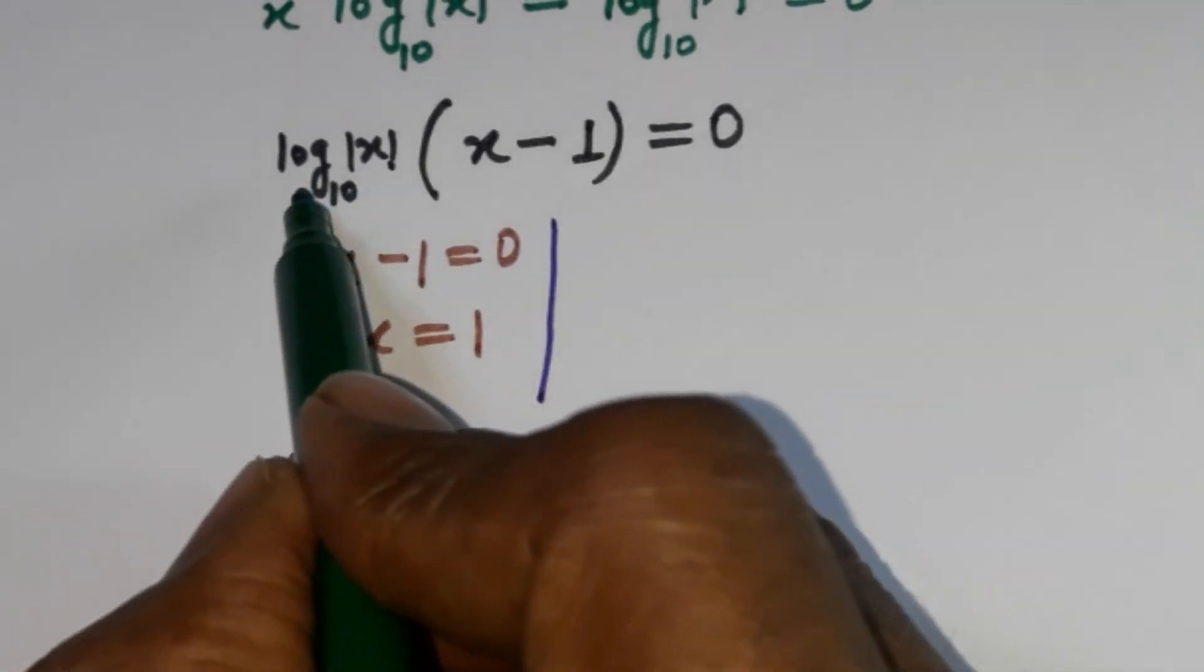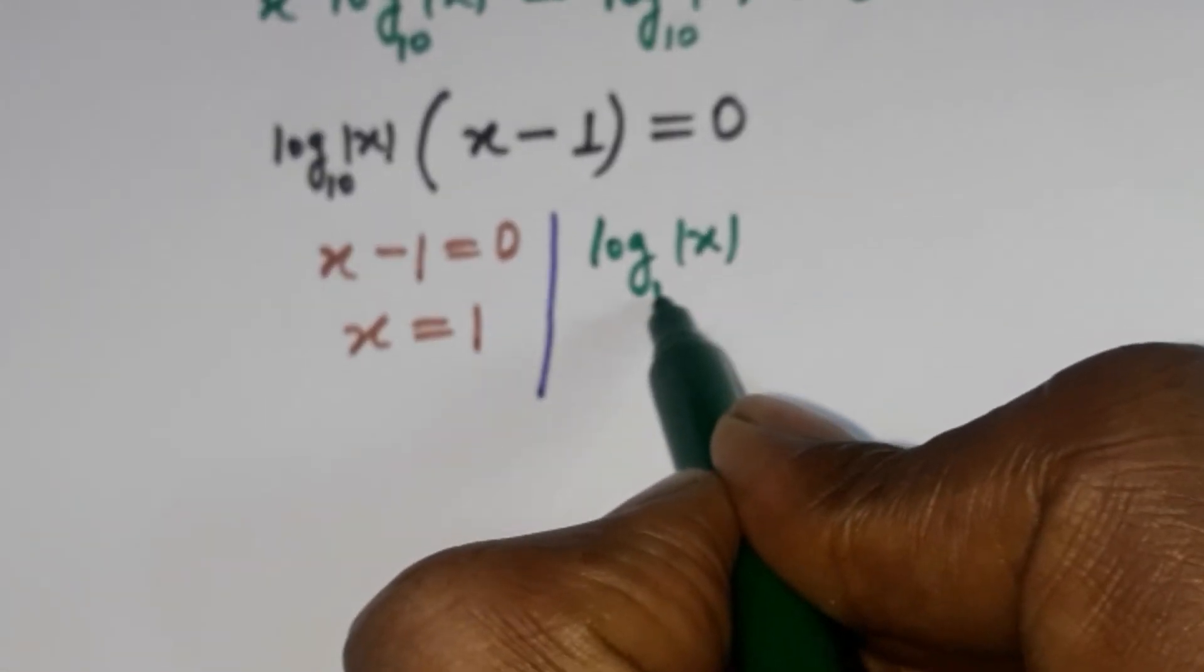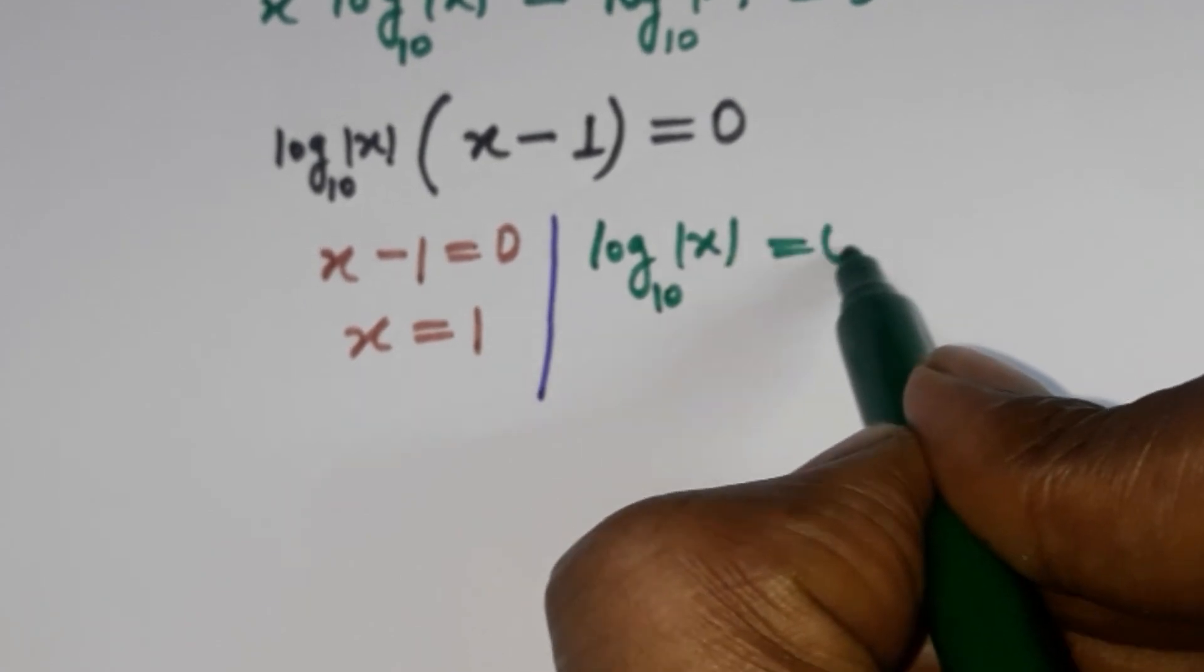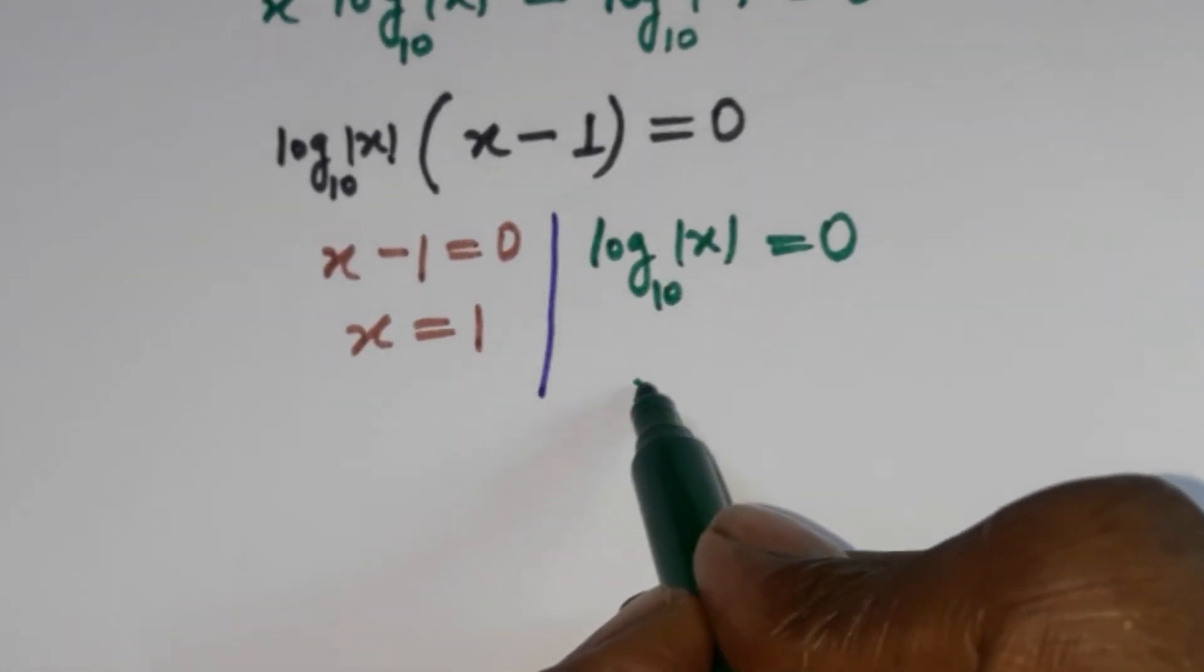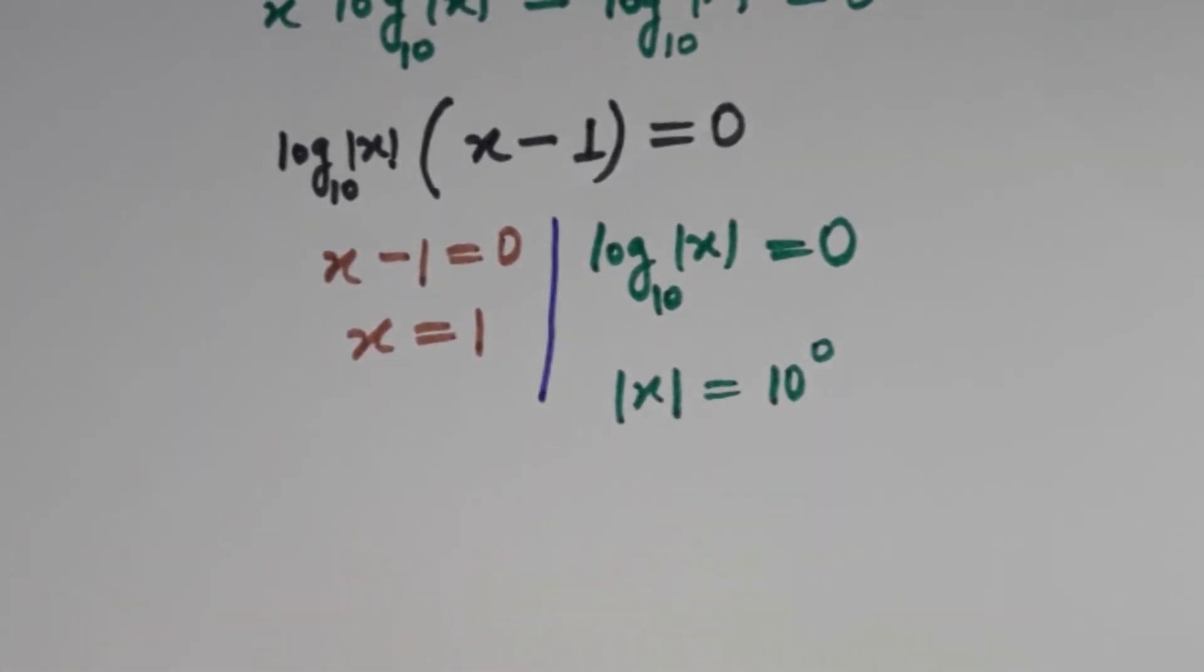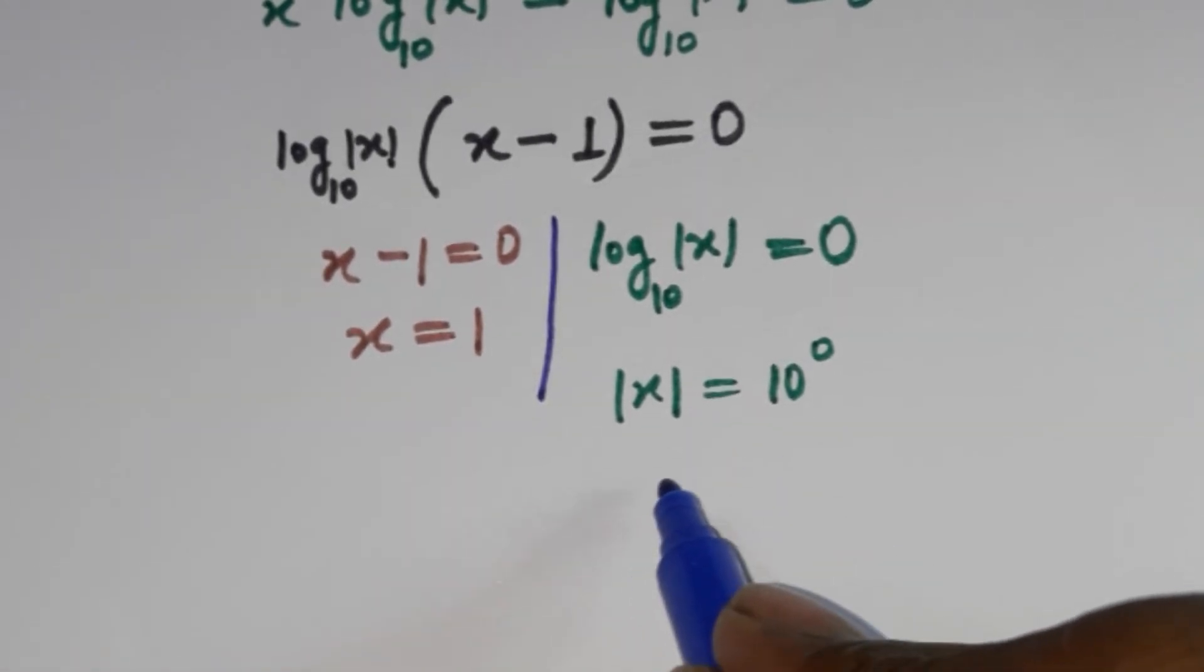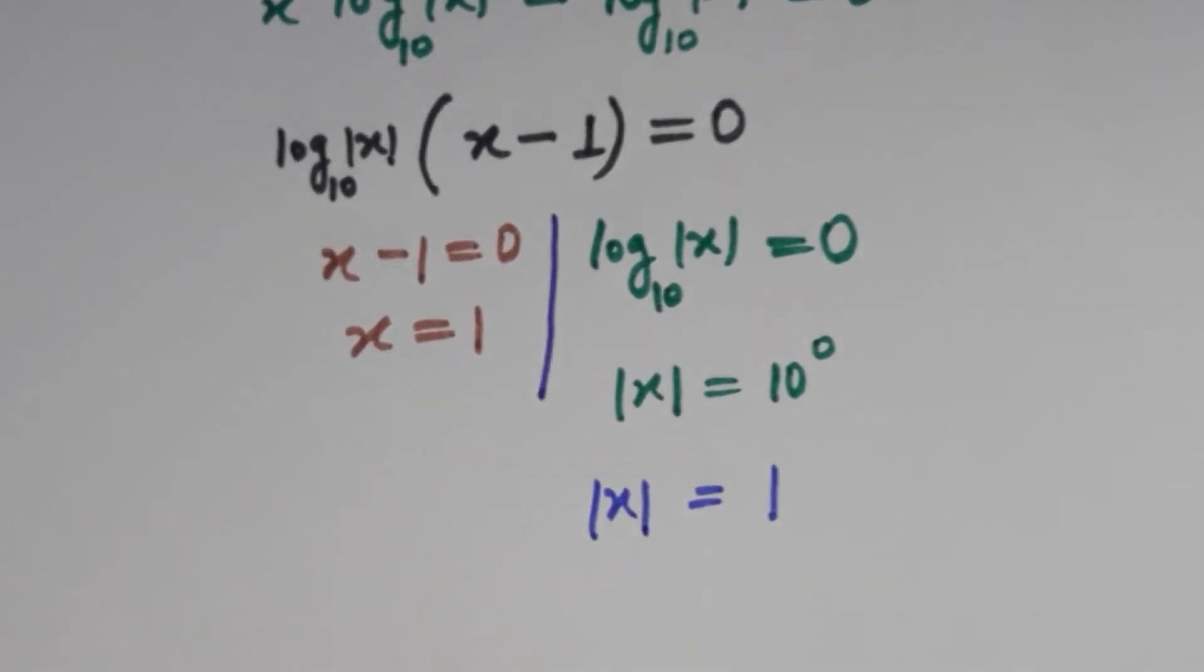Next we have that is this log mod x base 10 is equal to 0. So it will come mod x, and then it will come 10 to the power 0, so it is 1. Mod x equal to 1.